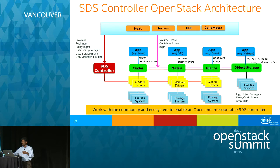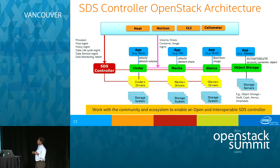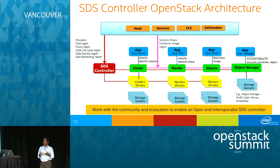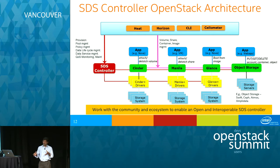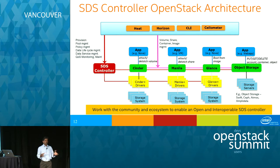In an OpenStack context, existing OpenStack investments — Cinder, Manila, Glance for images, and object stores — are leveraged. The controller automates storage management functions by taking advantage of existing building block functionality. The intent is not to replace them, but to build upon specific storage management functions that do not exist today in the OpenStack umbrella.